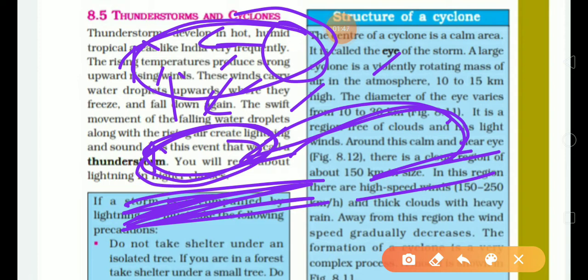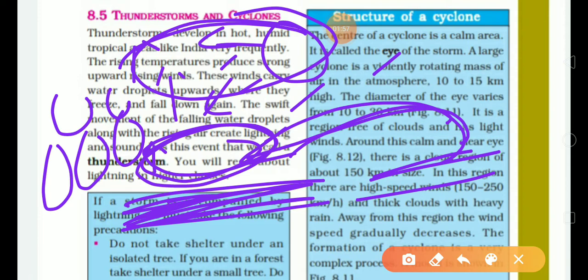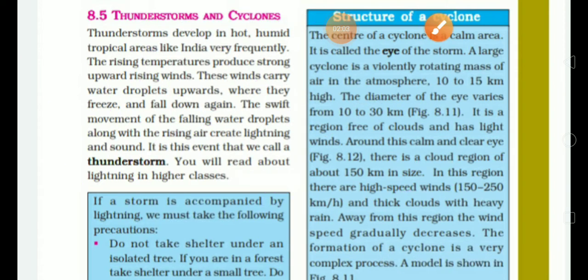When this cloud is formed and after the precipitation process, rain droplets are formed. Because of low pressure and high temperature, the rising air creates lightning and sound. This event is what we call a thunderstorm — when lightning and sound are created, this phenomenon is called a thunderstorm.